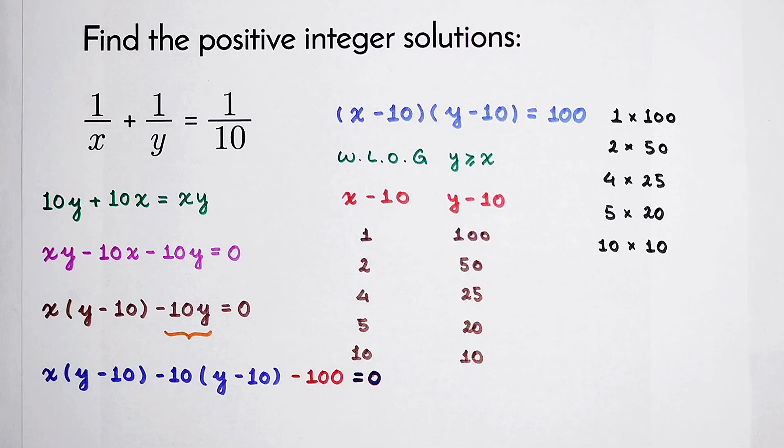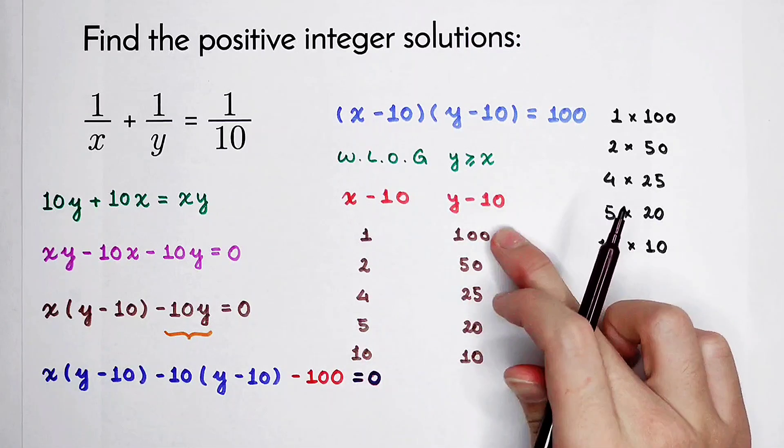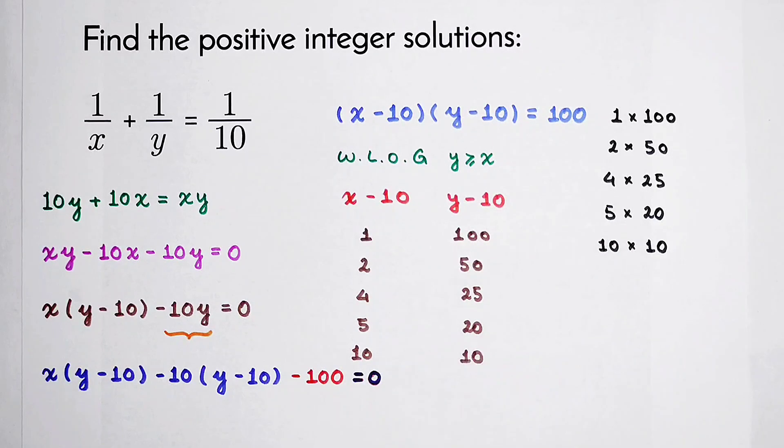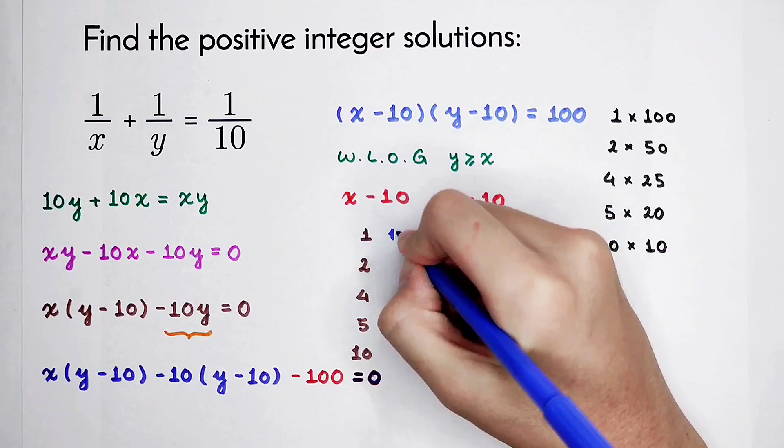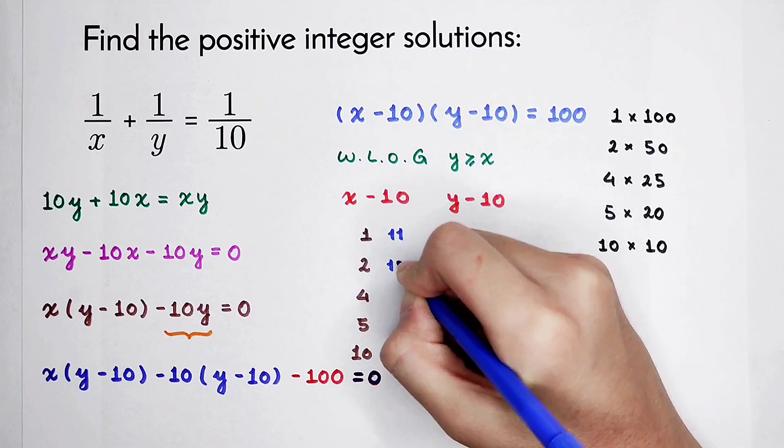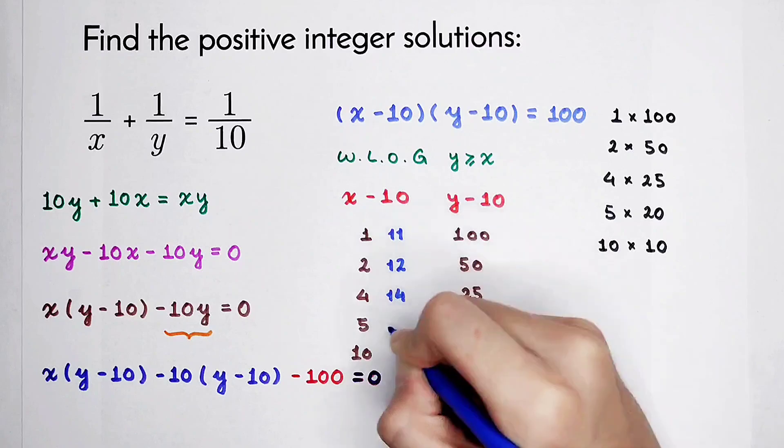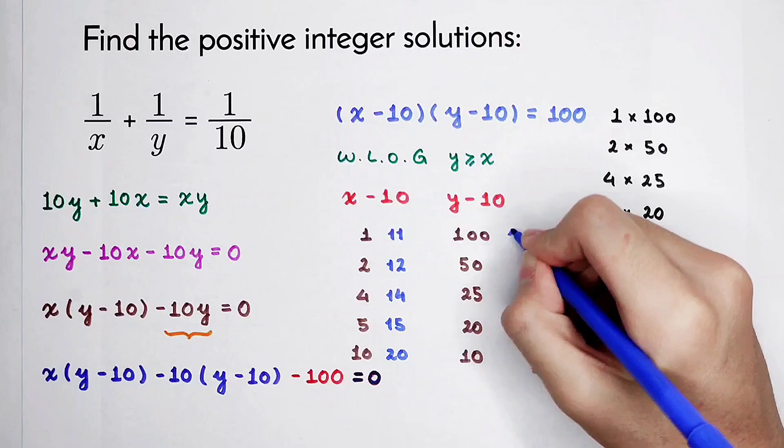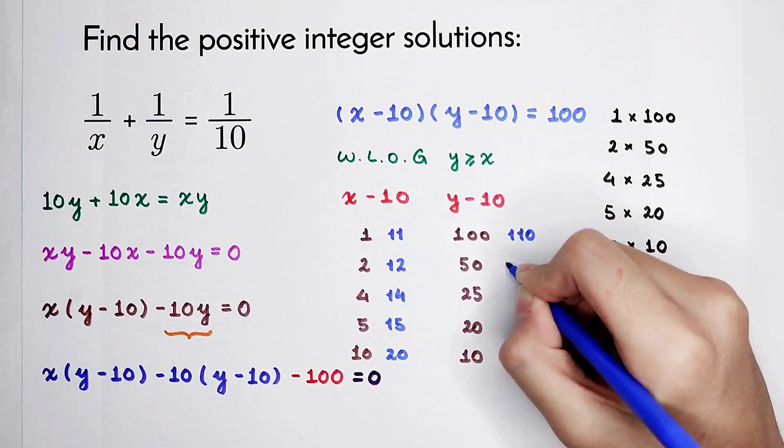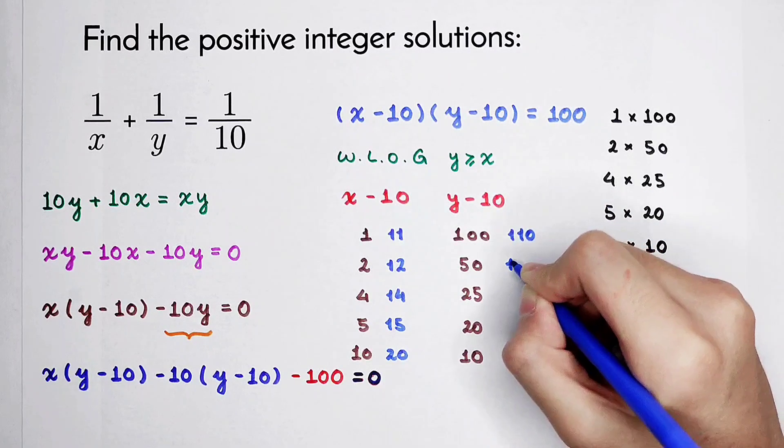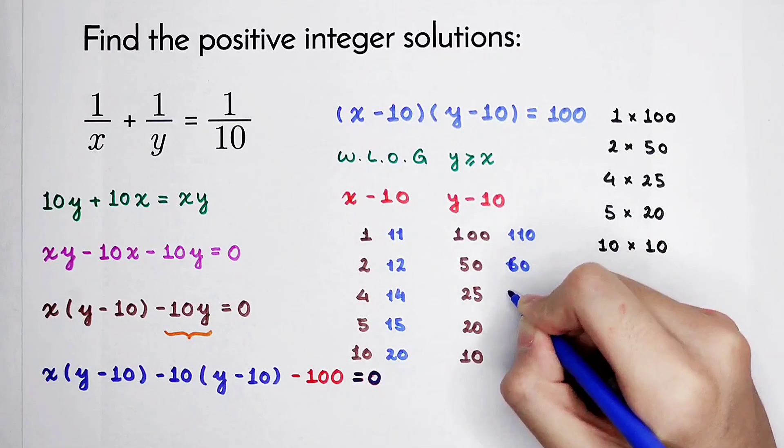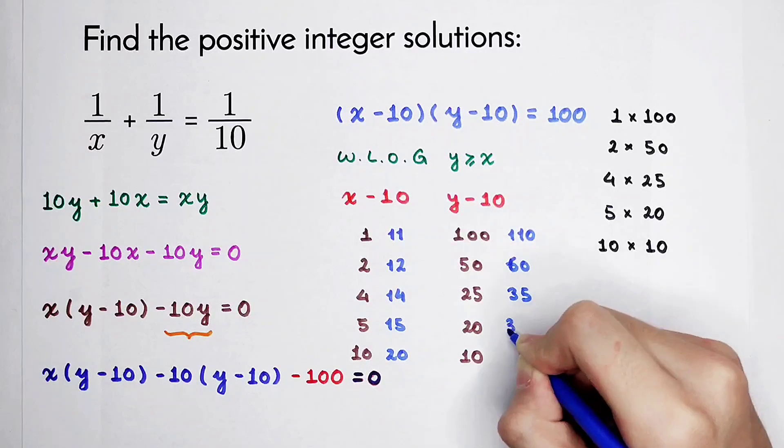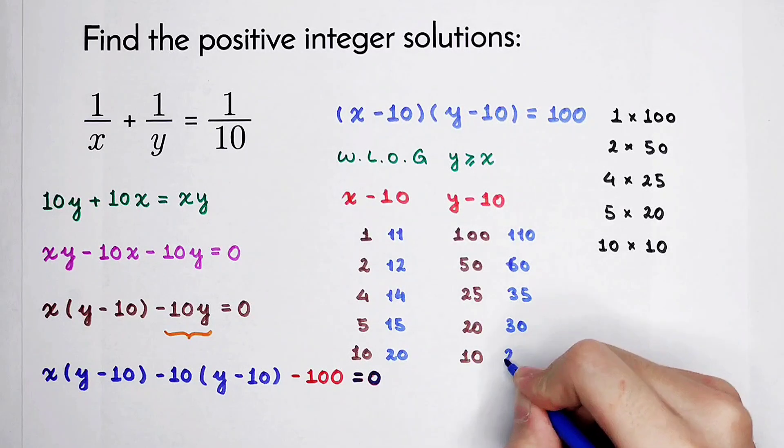X minus 10 is 1, 2, 4, 5, 10. So x is 11, 12, 14, 15, and 20. And y minus 10 is 100, 50, 25, 20, and 10, so y is 110, 60, 35, 30, and 20.